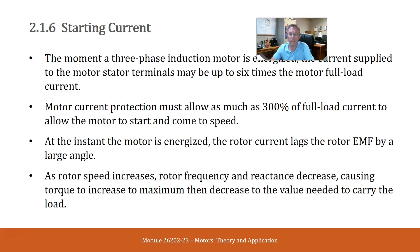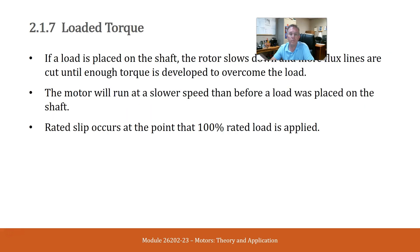At the instant the motor is energized, the rotor current lags the rotor EMF by a large angle. As rotor speed increases, rotor frequency and reactance decrease, causing torque to increase to a maximum, then decrease to the value needed to carry the load. If a load is placed on the shaft, the rotor slows down and more flux lines are cut until enough torque is developed to overcome the load. The motor will run at a lower speed than before a load was placed on the shaft. Rated slip occurs at the point that 100% rated load is applied.